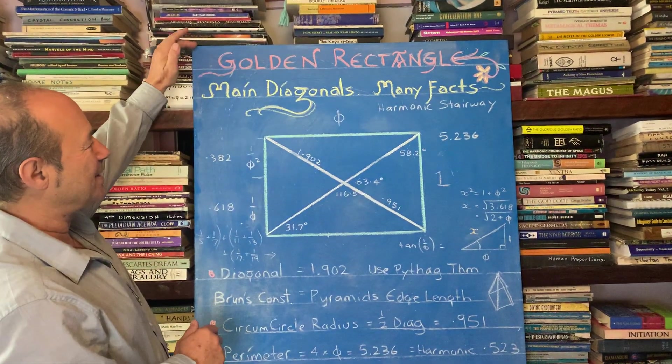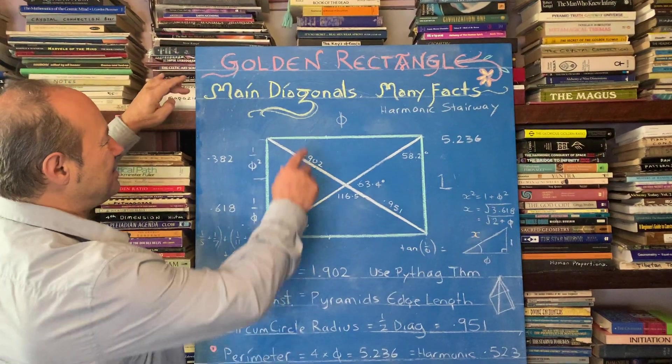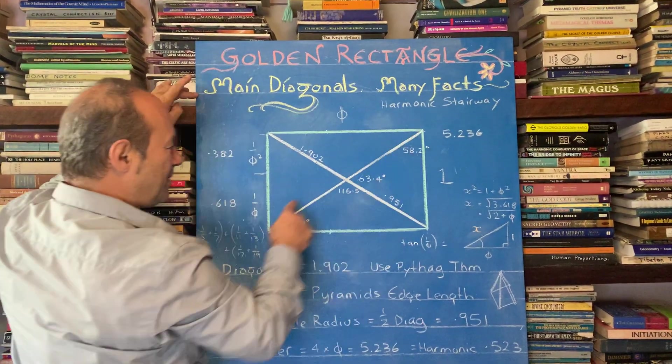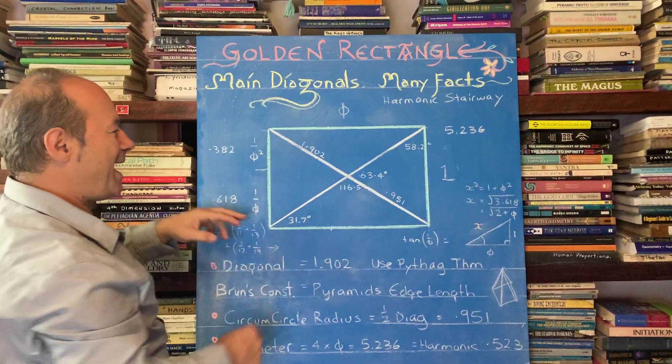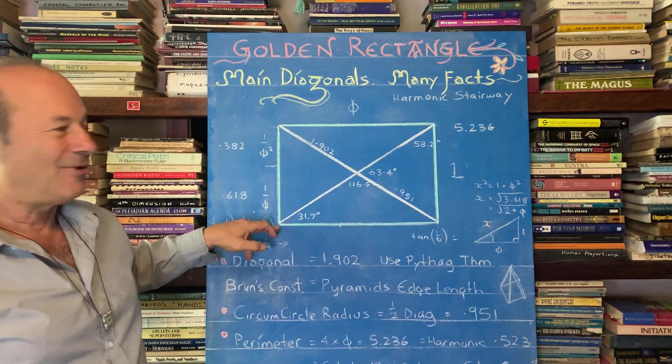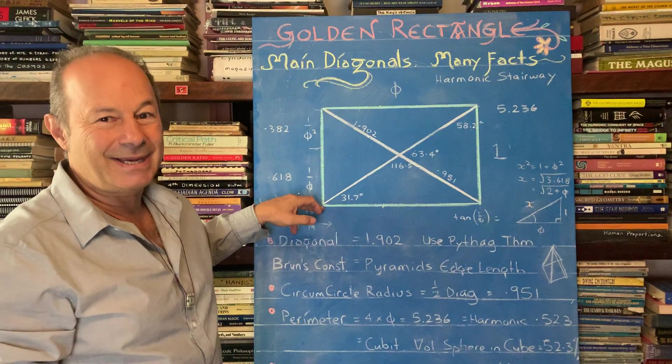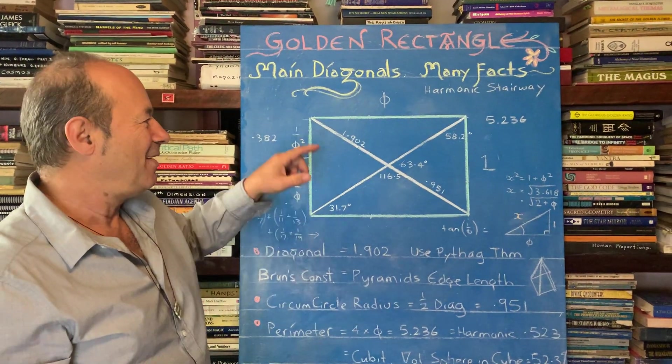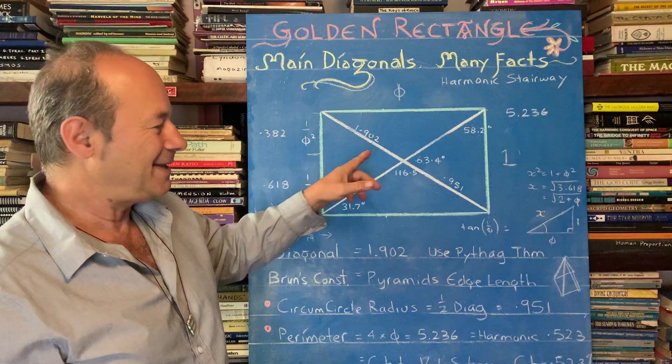So I'm calling this the golden rectangle. And in a nutshell, what we're doing today is we're only looking at the main diagonals of the golden rectangle. And you'll be amazed, I mean really amazed, what's encoded in this.